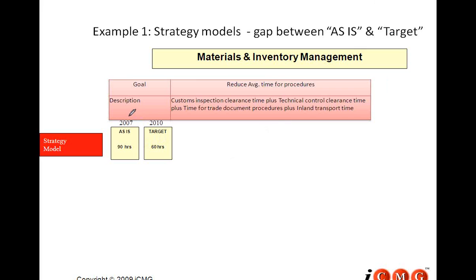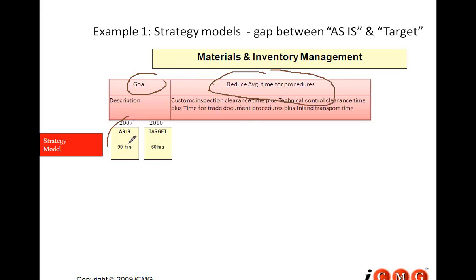So, if I'm doing the strategy model gap, for material inventory management, one of the goals was reducing average time for procedures, which is custom inspection clearance time. As is, the total time is 90 hours, and in my target strategy model, achieving this is 60 hours. So I know that I need to achieve this gap.